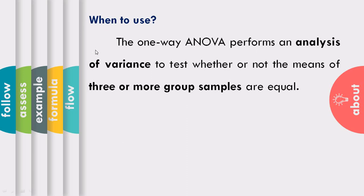When are we going to use analysis of variance? Analysis of variance is used if we want to test whether or not the means of three or more group samples are equal. You need at least three groups of samples.